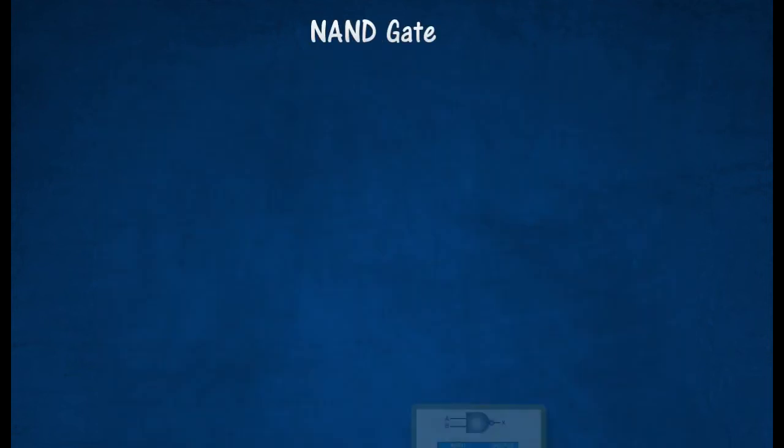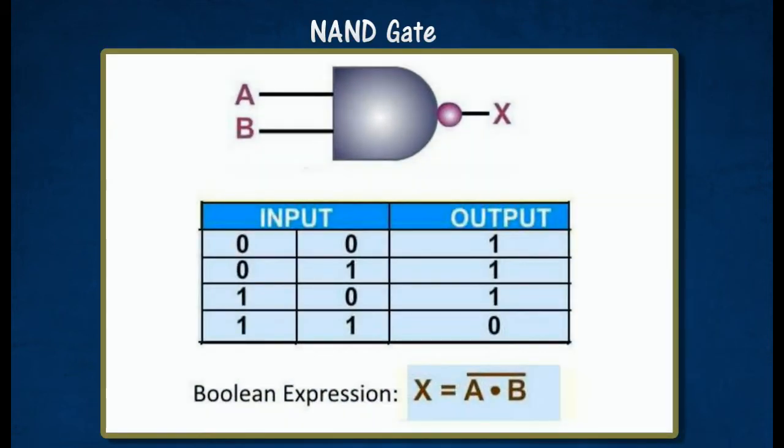The NAND gate operates as an AND gate followed by a NOT gate. It acts in the manner of the logical operation AND, followed by negation. The output is false if both inputs are true. Otherwise, the output is true.